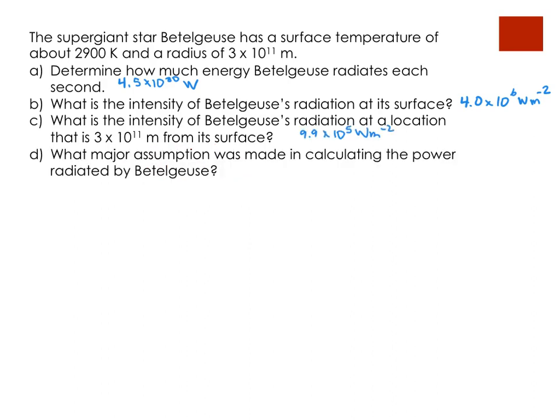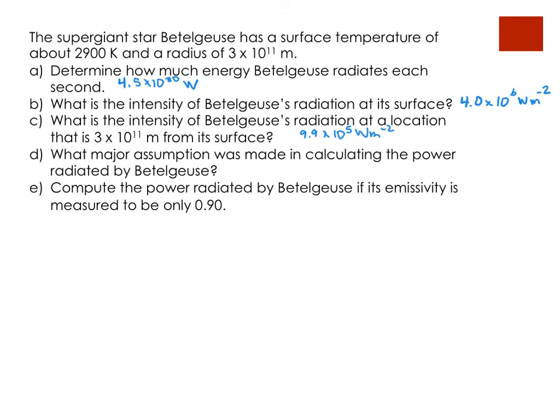So, what major assumption was made when we calculated this? Well, we assumed it was like a black body. So, what if we assumed that the power radiated was actually not from a black body but had an emissivity of 0.90? Again, pause. See if you get the same answer. Did you get the answer?